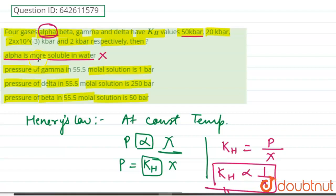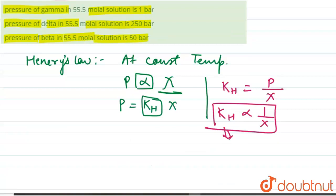Now let us proceed to the second option. Second option says pressure of gamma in 55.5 molal solution is 1 bar. So molal here represents the molality, that is concentration. Now if we talk about concentration.